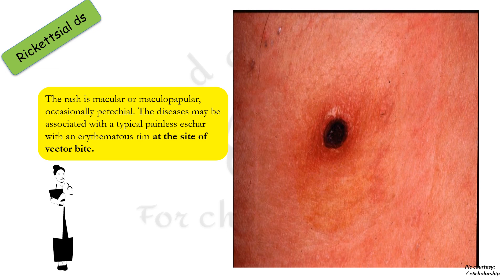In rickettsial diseases, the rash is macular or maculopapular, occasionally petechial. The disease may be associated with a typical painless scar with an erythematous rim at the site of vector bite, as seen in the picture.